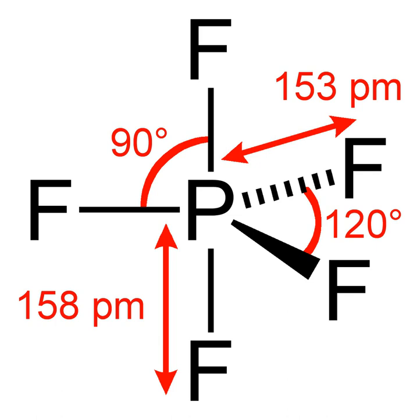Structure. Single crystal X-ray studies indicate that PF5 has trigonal bipyramidal geometry. Thus it has two distinct types of P-F bonds: axial and equatorial.